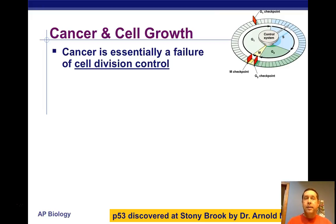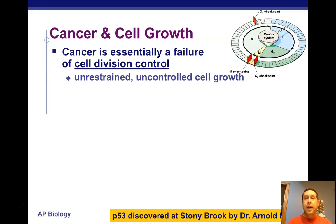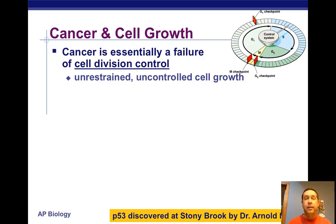Cancer is essentially a failure of cell division control. Unrestrained, uncontrolled cell growth produces abnormal cells that don't function properly and crowd out the normal cells. One of the things that happens with cancer cells and tumors is that most cells have contact inhibition when they make contact, but cancer cells don't — they just crowd out the healthy tissue, and that's how they cause disease.